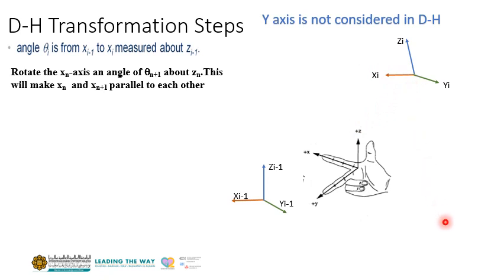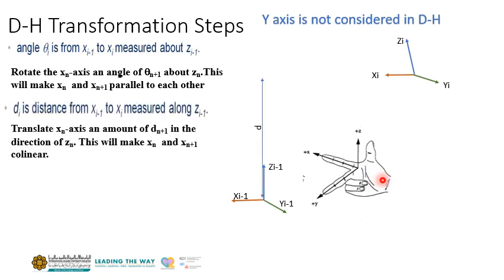And the next thing is you can see this x_{i-1} and x_i are shifted along z_{i-1}. So we have to bring it up so they are on the same level.